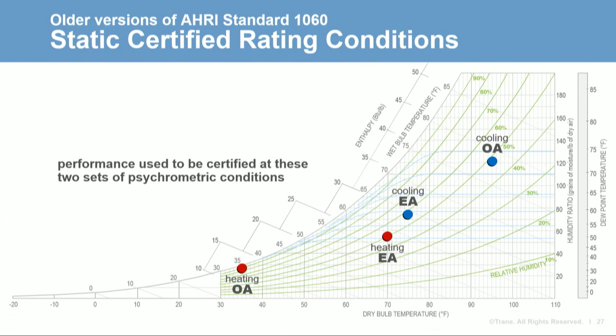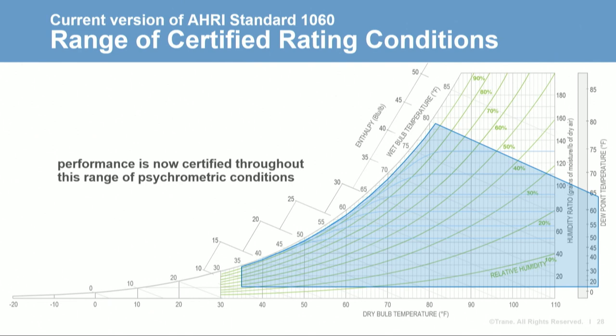In the past, AHRI 1060 defined two sets of air conditions for rating these devices — one for cooling and one for heating — similar to how we certify performance of a packaged rooftop unit. But in the latest version, this has changed to defining a range of conditions for certified performance, more like how we certify the performance of a chilled water or hot water coil. The energy recovery device is certified for any set of psychrometric conditions within the blue boundary. Note that AHRI only certifies down to 35 degrees Fahrenheit due to the difficulty of testing where frost might form, though these technologies are commonly used at colder conditions.